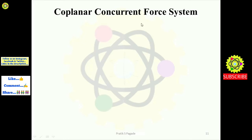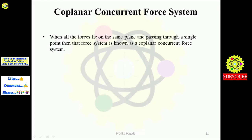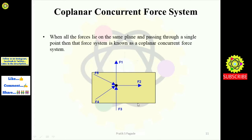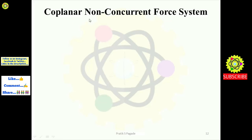Next is the coplanar concurrent force system. Definition: when all the forces lie on the same plane and pass through a single point, that force system is known as a coplanar concurrent force system. In the example, the yellow portion is the plane, and there is a point on this plane. Forces f1, f2, f3, f4, and f5 all lie on this yellow plane and pass through that single point.